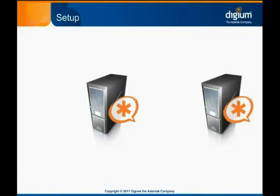We start with two Asterisk systems. The one on the left is the one initiating this call, as indicated by the direction of the arrow. The word above is the specific message being sent. The first message sent is called New. It will include the called number and may include other information, such as the calling number, a list of codecs it can speak, and authentication credentials.